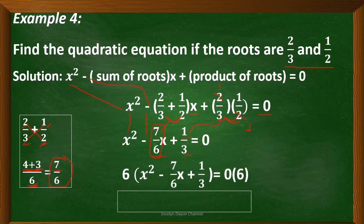Now multiply both sides of the equation by 6, since 6 is the least common denominator. Apply the distributive property: 6 times x squared is 6x squared; 6 times negative 7 over 6 x is negative 7x; 6 times 1 third is positive 2; and 0 times 6 is 0. So the quadratic equation in standard form is 6x squared minus 7x plus 2 equals 0.